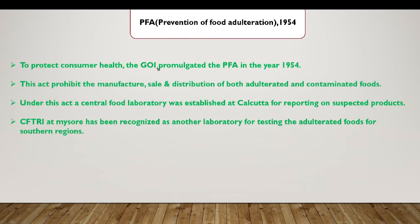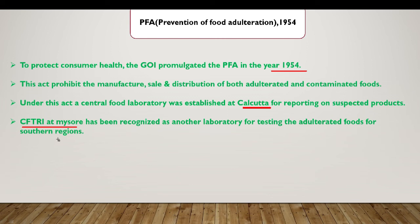To prevent food adulteration and protect consumer health, the Government of India enacted the Prevention of Food Adulteration Act in 1954. This act prohibits the manufacture, sale, and distribution of both adulterated and contaminated foods. Under this act, a Central Food Laboratory was established at Calcutta for reporting on suspected products, and CFTRI at Mysore has been recognized as another laboratory for testing adulterated food for the southern region.